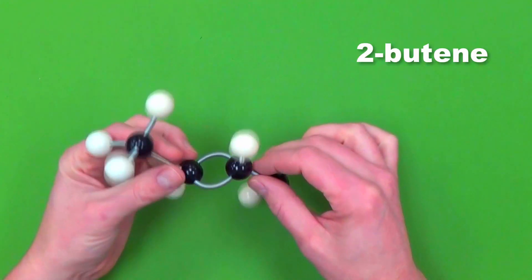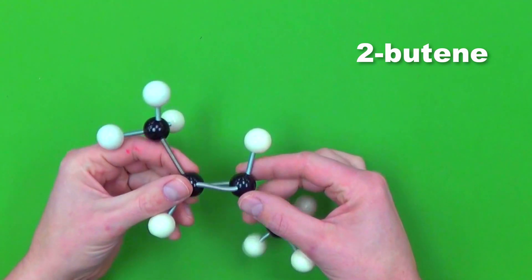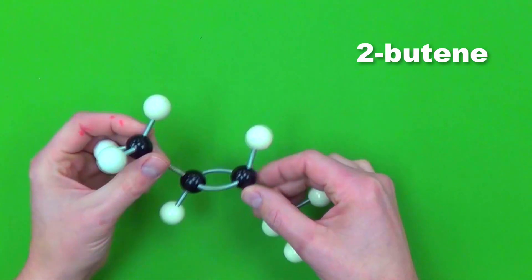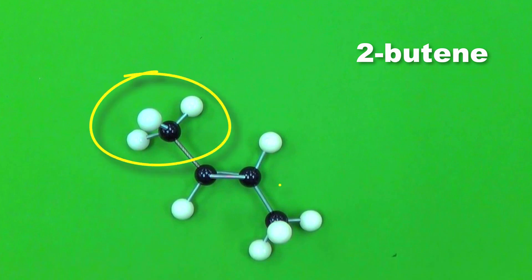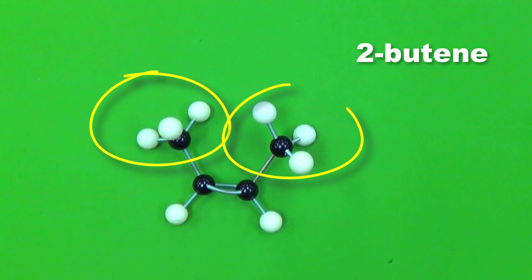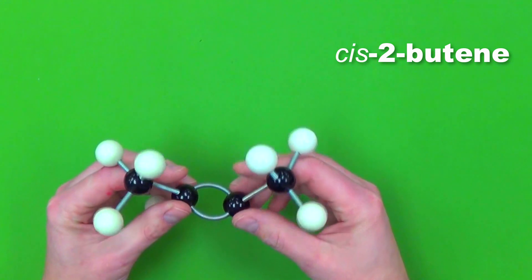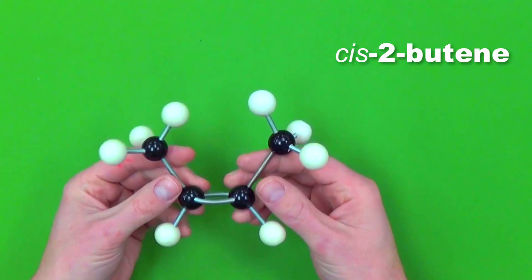So this molecule here is a 2-butene, and you'll notice the double bond, and that double bond really makes it hard for those side groups to rotate around each other. If we take a look at these two groups, they're across that double bond, so they're a trans-2-butene, while in this orientation they're on the same side, so they're a cis-2-butene. And these side groups stay in these orientations because of the multiple bond that prevents them from rotating back.